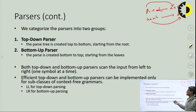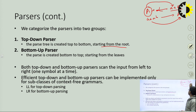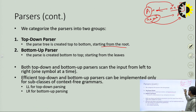In the top-down parser, the parse tree is created top to bottom starting from the root. We start with the start symbol, apply different derivations, and then check whether the start symbol and sentence are connected. If not connected, there is a problem in the grammar. In the bottom-up parser, it starts from the leaves — where we take the accepted languages in the context-free grammar — and we must reach the start symbol.